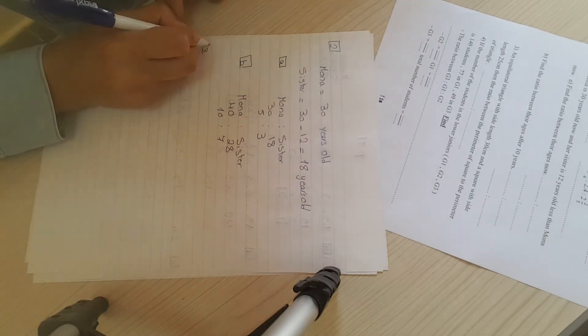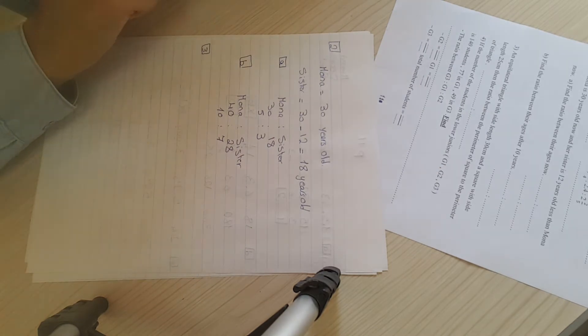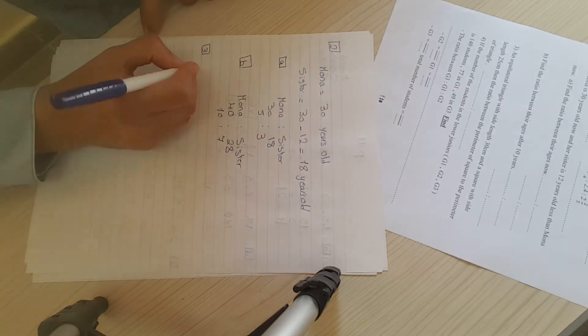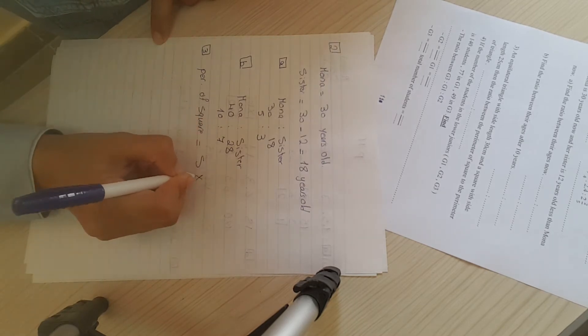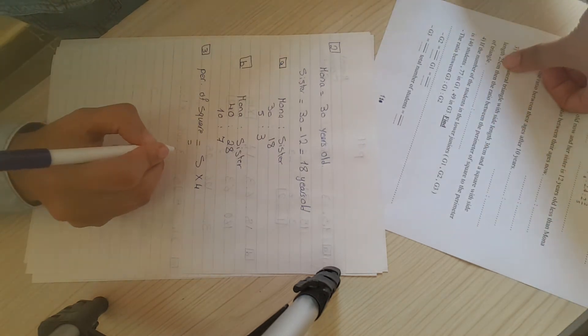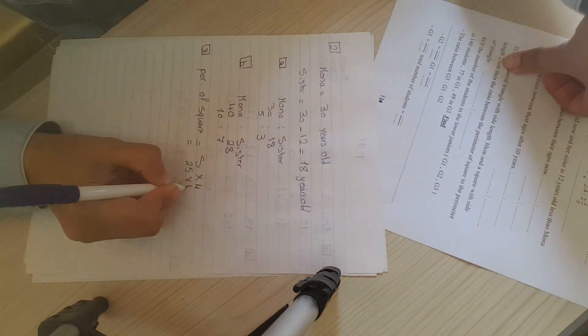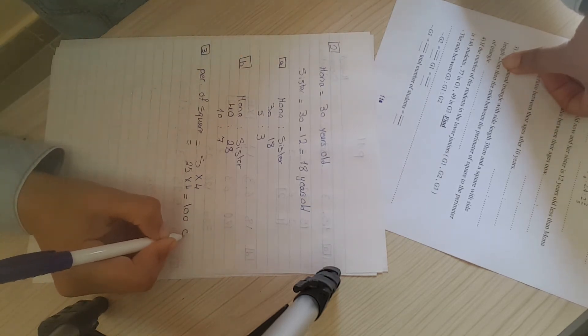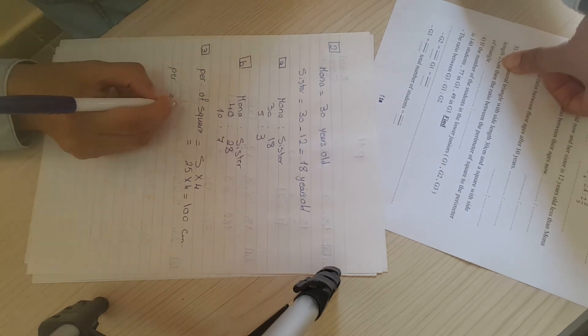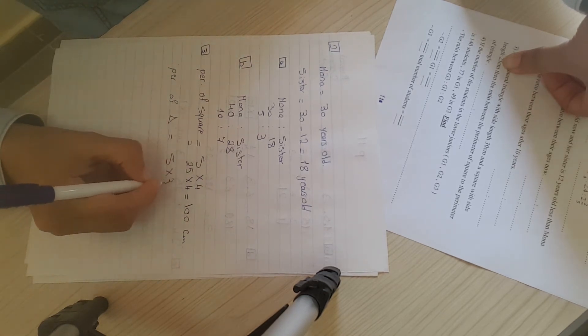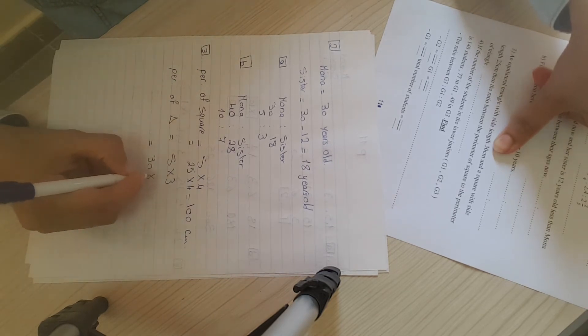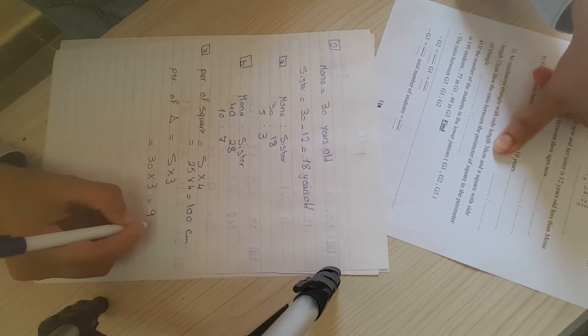In question 3, an equilateral triangle with side length 30 cm and a square with side length 25 cm. Find the ratio between the perimeter of the square to the perimeter of the triangle. The perimeter of square is side times 4, so 25 times 4 equals 100 cm. The perimeter of equilateral triangle is side times 3, so 30 times 3 will be 90 cm.